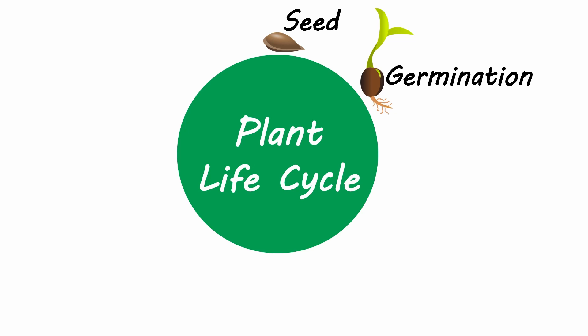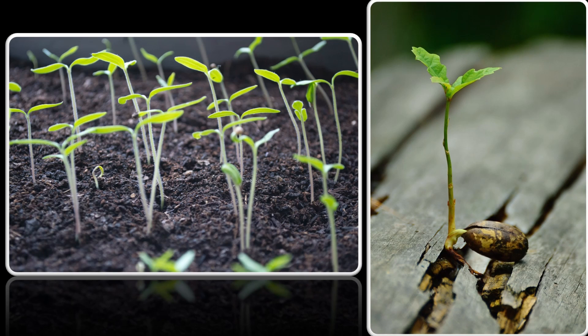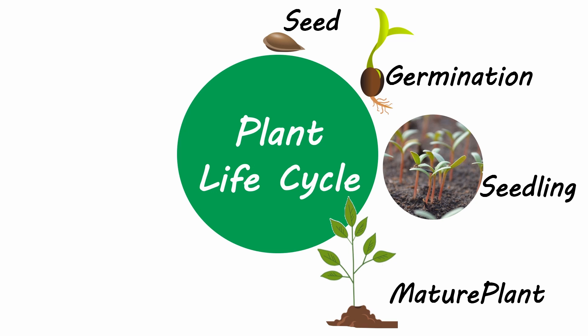As the plant grows, it becomes a seedling. It has a tiny stem with a few leaves. The leaves help the plant make food from sunlight through a process called photosynthesis. The seedling will grow taller and bigger. It develops more leaves, stems, and branches. This is when the plant is considered a mature plant.